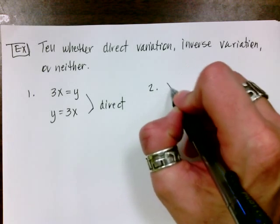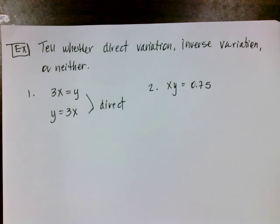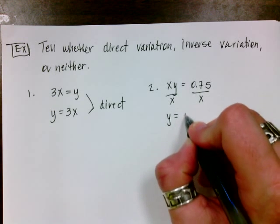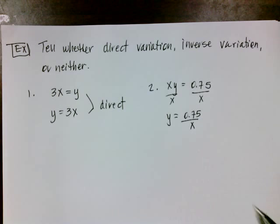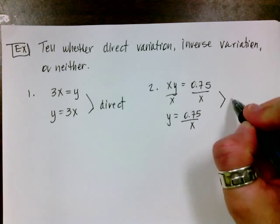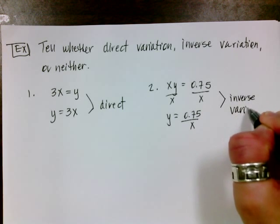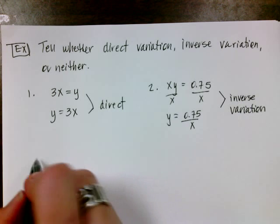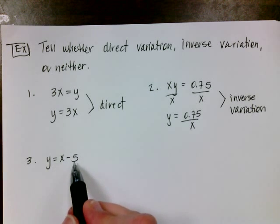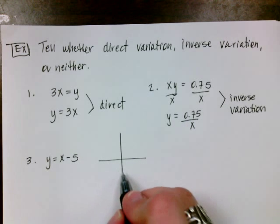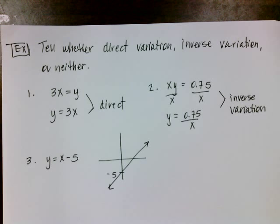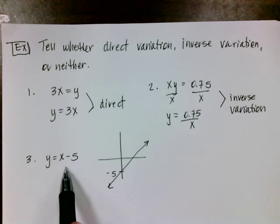My second problem is going to be xy equals 0.75. Again, the problem's really not in the form that we're used to seeing, so I'm going to divide both sides by x, and I'm going to get y equals 0.75 over x. The 0.75 becomes the constant of variation. My variable x is in the denominator. Therefore, this is going to be inverse variation. And then the last one is going to be y equals x minus 5. This is a line whose y-intercept is negative 5 and whose slope is 1. So if I had negative 5, my line might do something like that. That's not direct variation, nor is it inverse variation, because I don't have an x in the denominator.